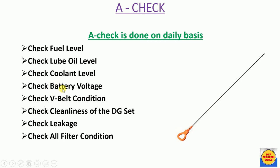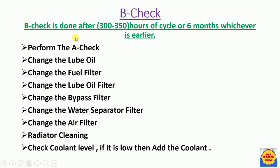Check the battery voltage using a multimeter or the DG control panel — it should always be 24 volts. Check the V-belt condition: it should not be loose or worn out; tighten if loose, replace if worn. Check the cleanliness of the DG set — it should be clean internally and externally. Check for any leakage and inspect all filters including fuel filter, bypass filter, lube oil filter, and air filter.